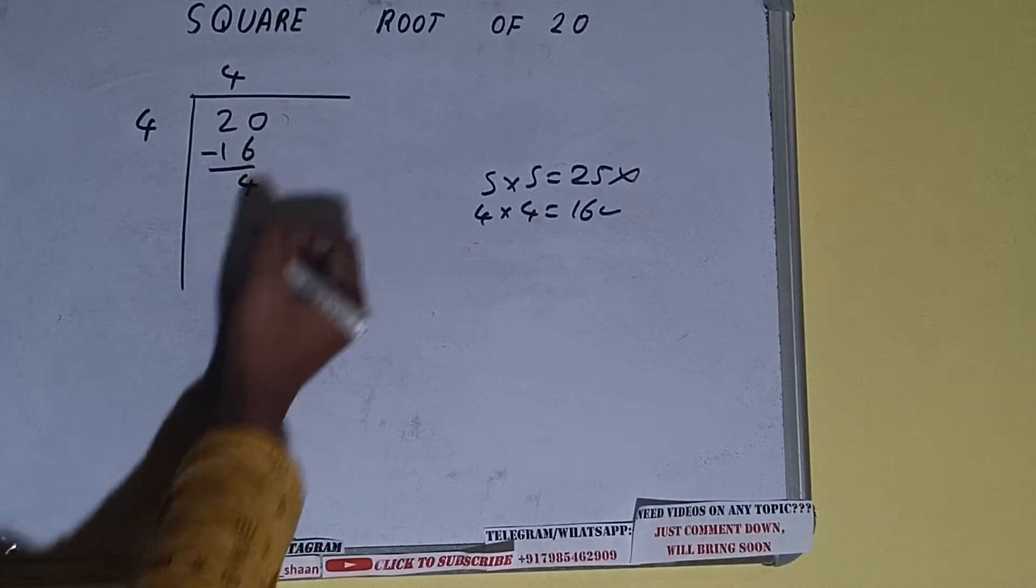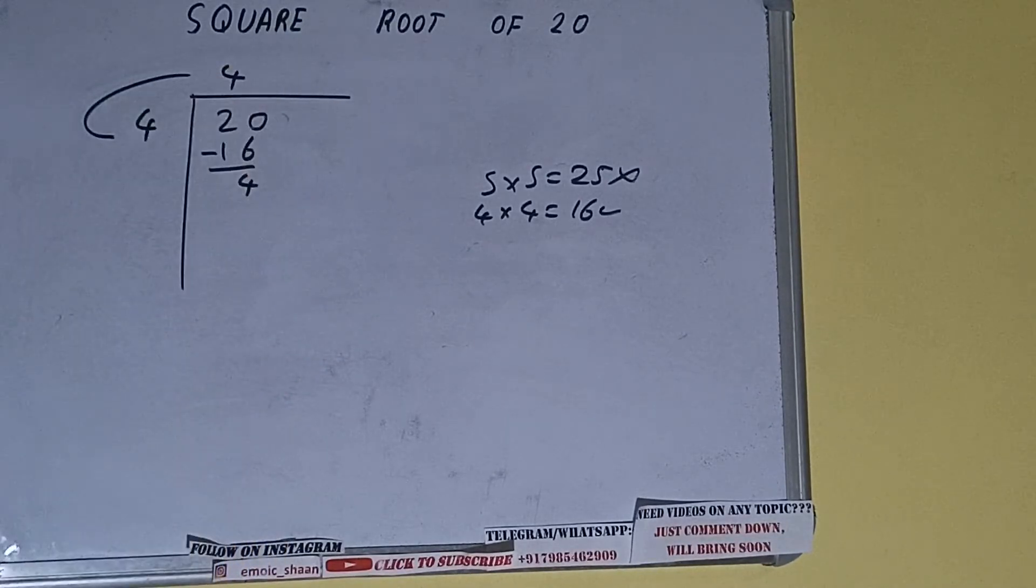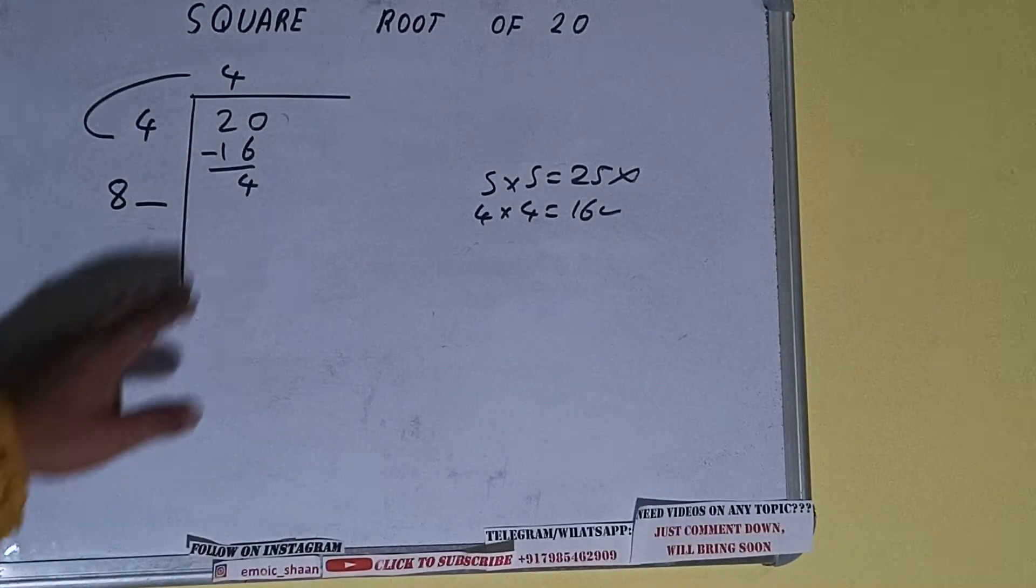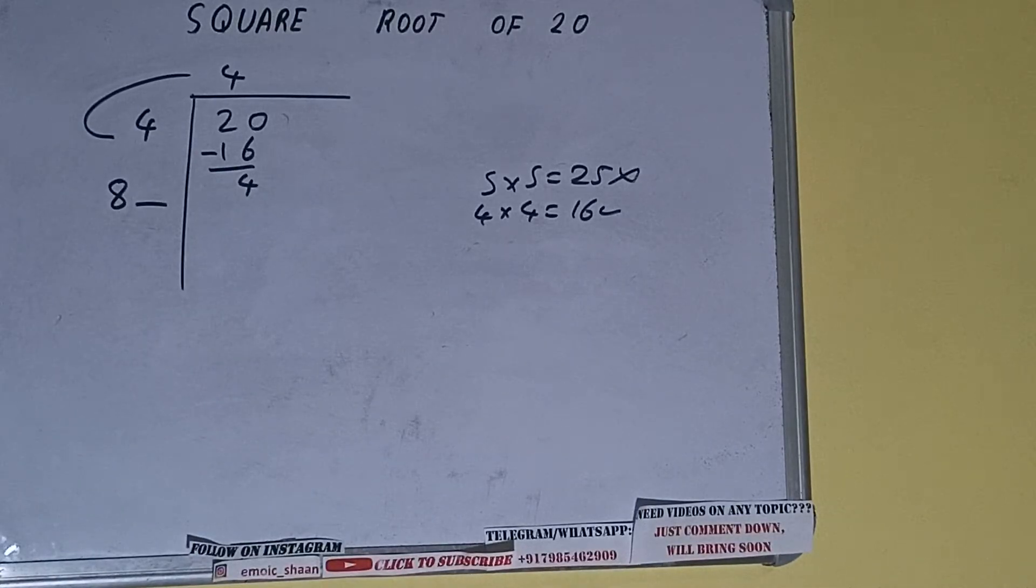Subtract, 4 will be left. We did 4 into 4, so add both. 4 plus 4 will be 8. Write it here and keep a digit extra, and this number we need to make it big so that we can divide.